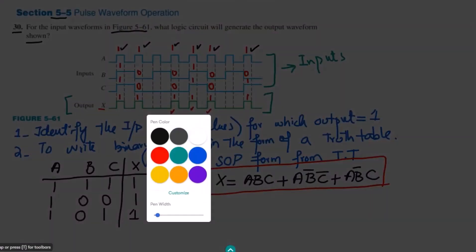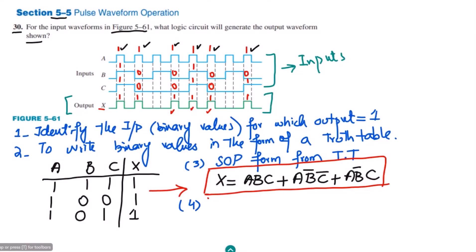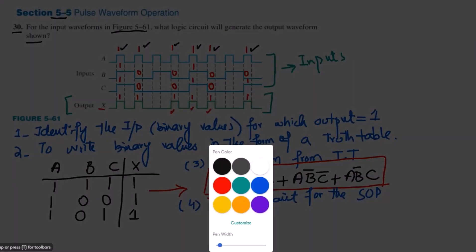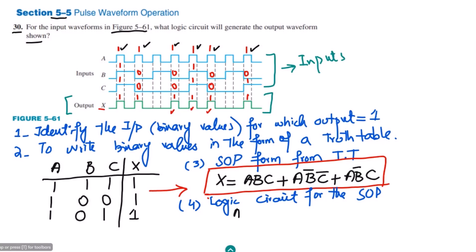The final step is the implementation — drawing the logic circuit for the SOP expression. We have three inputs: A, B, and C. The first term is ABC, so we use a three-input AND gate. The output of this first AND gate is ABC.